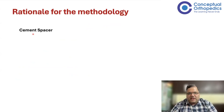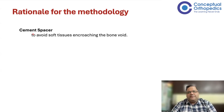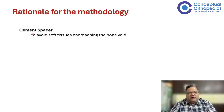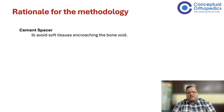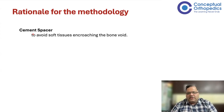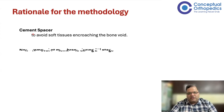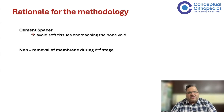The rationale of the technique is that the cement spacer plays several important roles. The main role is preventing encroachment of soft tissues into the bone loss area. When there is a bone defect between the proximal and distal segments, soft tissues can start encroaching in that gap, and we know that interposition of soft tissues between bones prevents healing. The cement spacer occupies that space so soft tissue cannot encroach — that was the intention.